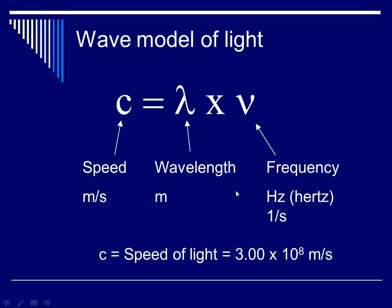And C, the speed of light, is a constant. That means it's always the same, and that number is 3.00 times 10 to the eighth meters per second.